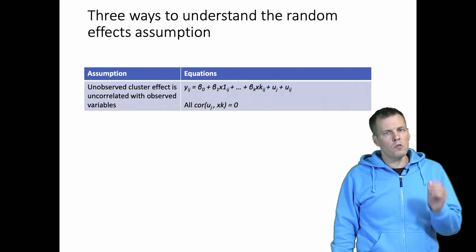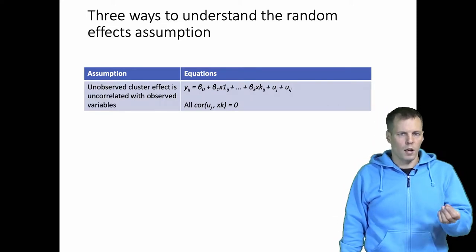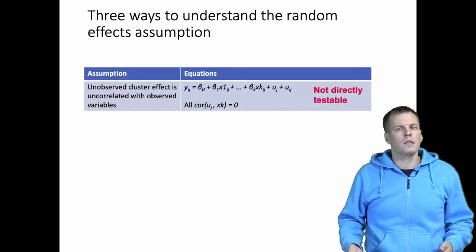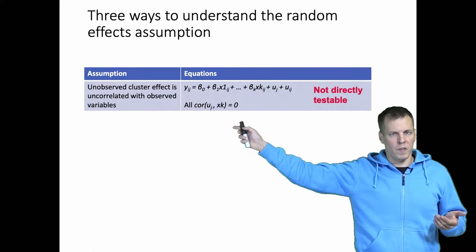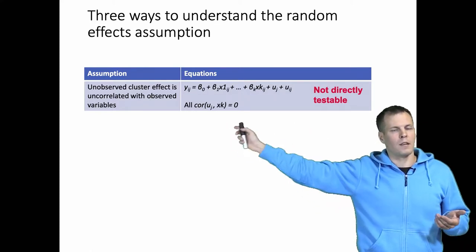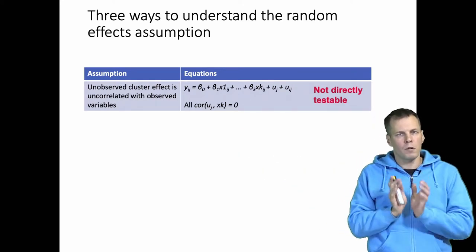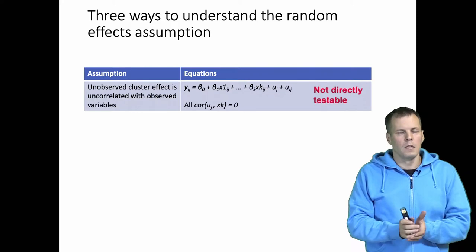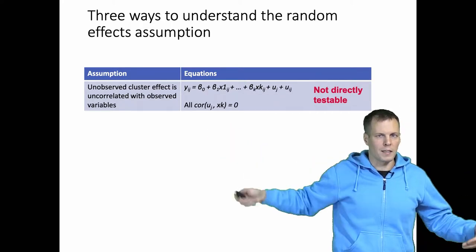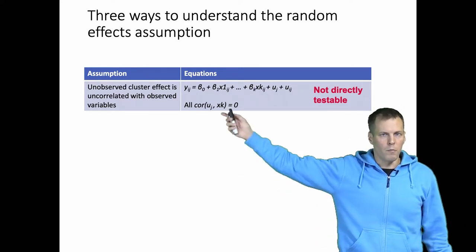Because uj itself is not observed, we cannot calculate its correlation with the predictors. Therefore this way of presenting the random effects assumption does not give us anything that would be directly testable. And it's also difficult to understand what the random effects assumption means in this form, because uj is fairly abstract — it represents all the differences between individuals that are not accounted for by the model.